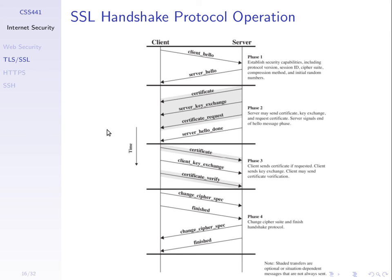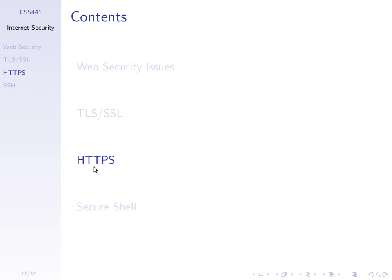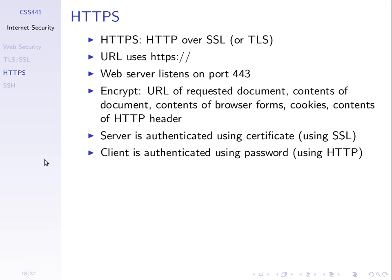We've gone through the handshake operation and seen examples of the record protocol. We've used HTTPS as an example of SSL, but other applications can also use SSL. For client authentication in web browsing, we normally use passwords — the user provides a username and password via an HTTP form.